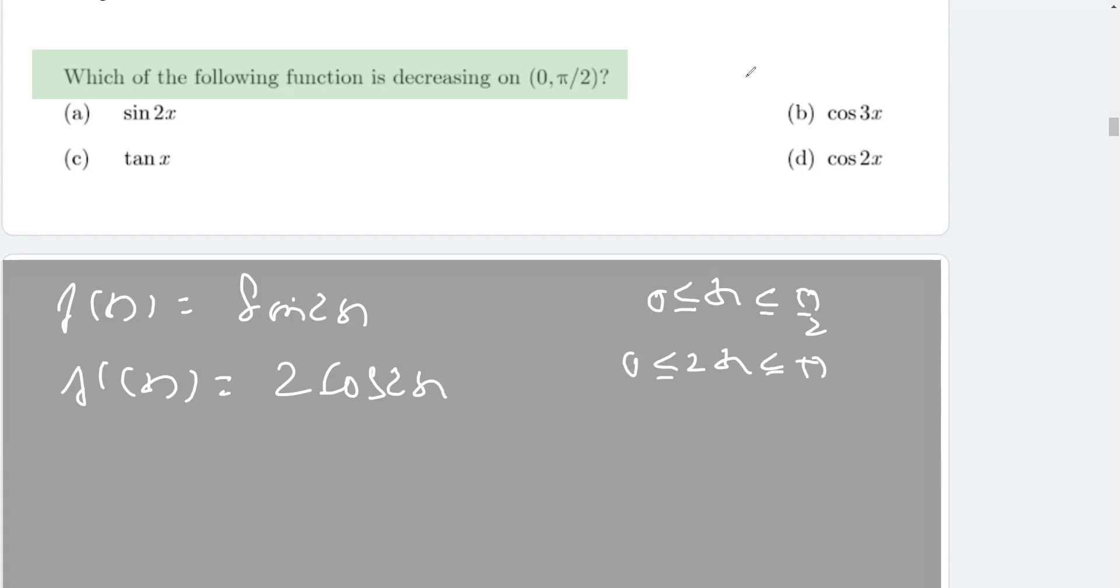Now, what you need to observe here that from 0 to π, that's these two quadrants. Cos is positive here and negative here. So, it's neither increasing nor decreasing. So, we'll discard this option.